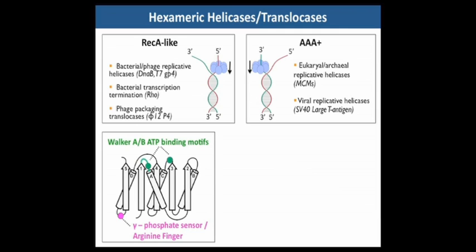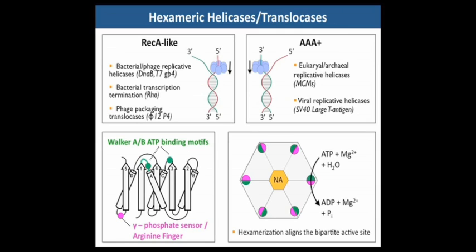Despite this evolutionary and functional divergence, both families have evolved from a common protein fold, an alpha-beta-alpha sandwich containing the Walker A and B ATP binding motifs on one side, and gamma-phosphate sensors, typically referred to as arginine fingers, on the other side. When this protein fold assembles around a nucleic acid substrate, six bipartite ATP binding sites are formed, capable of hydrolyzing ATP and propelling the helicase along nucleic acids.